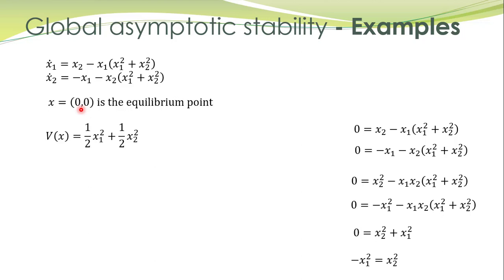We take a candidate Lyapunov function. Since we are studying global asymptotic stability, this should be radially unbounded. So we have taken a positive definite function which is radially unbounded.